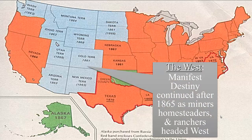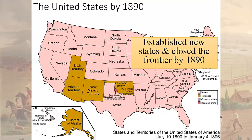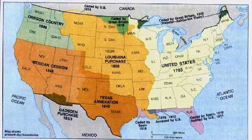Here's another map of the United States. Manifest Destiny is continuing after 1865 — miners, homesteaders because of the Homestead Act, and ranchers all head into the West to open up the land for development. Look at the drastic change from 1880 to 1890. Our question is: what is the American frontier?